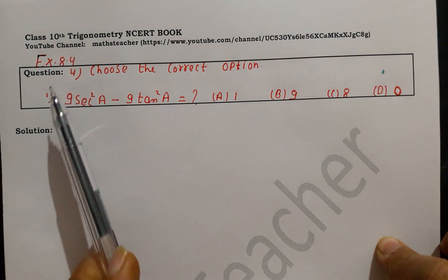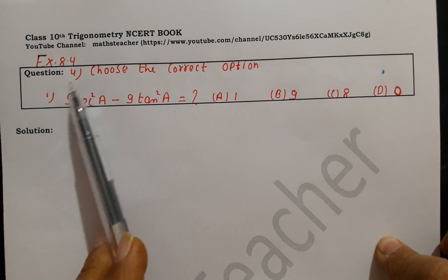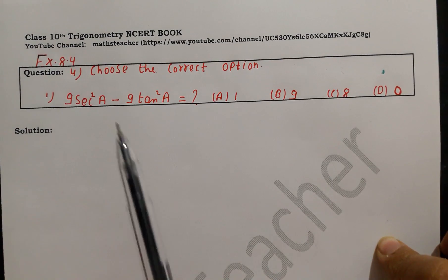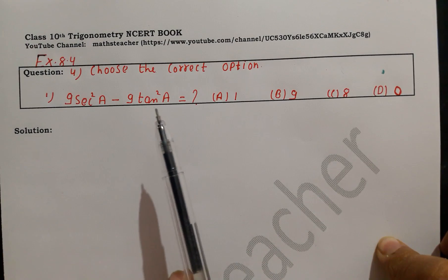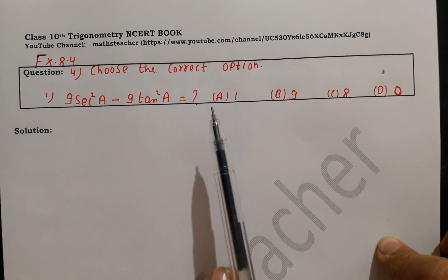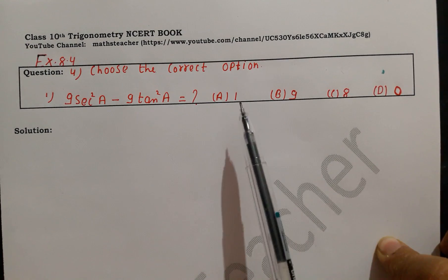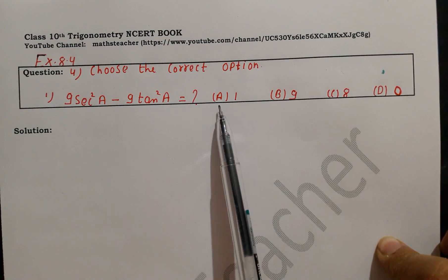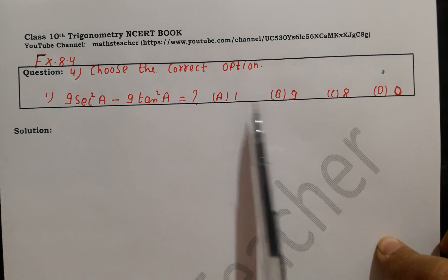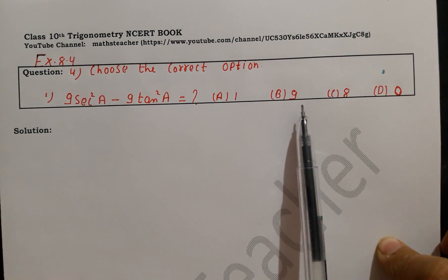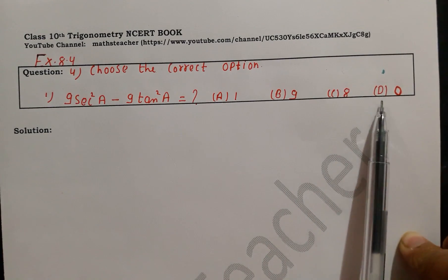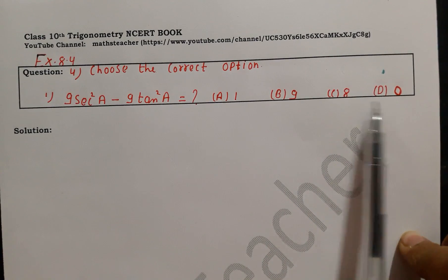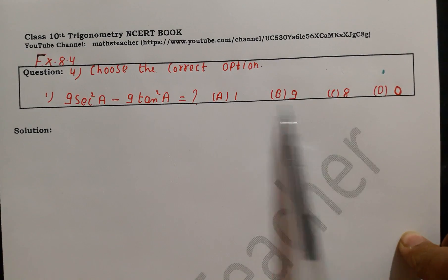Question 4, first part: 9 sec²A minus 9 tan²A equals what? The options are: A is 1, B is 9, C is 8, and D is 0. You have to identify which of these 4 options is correct.